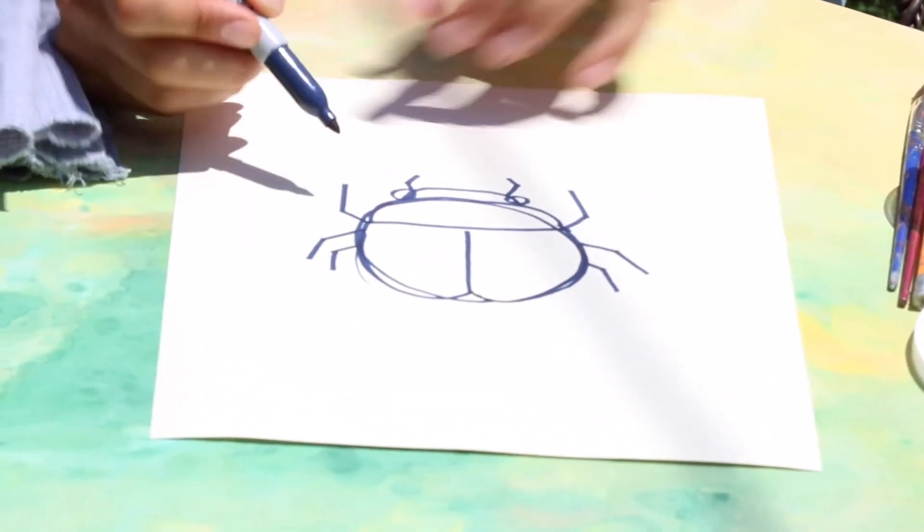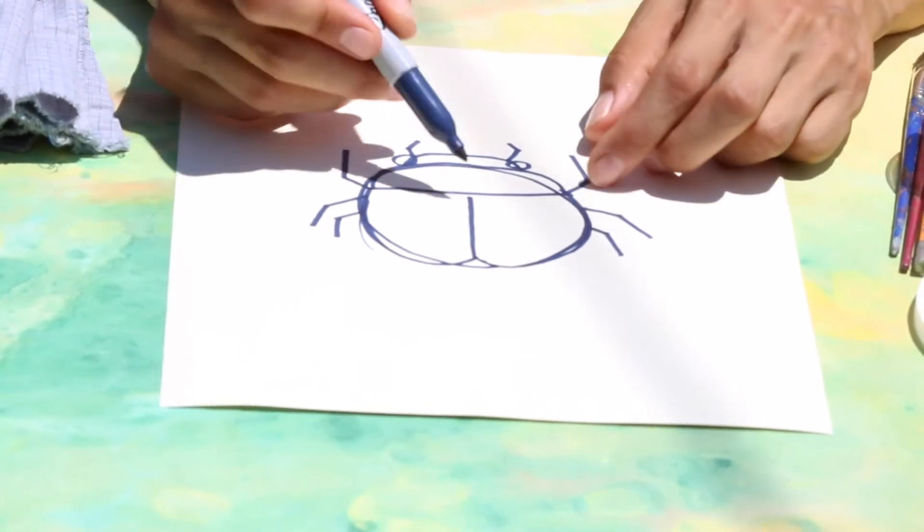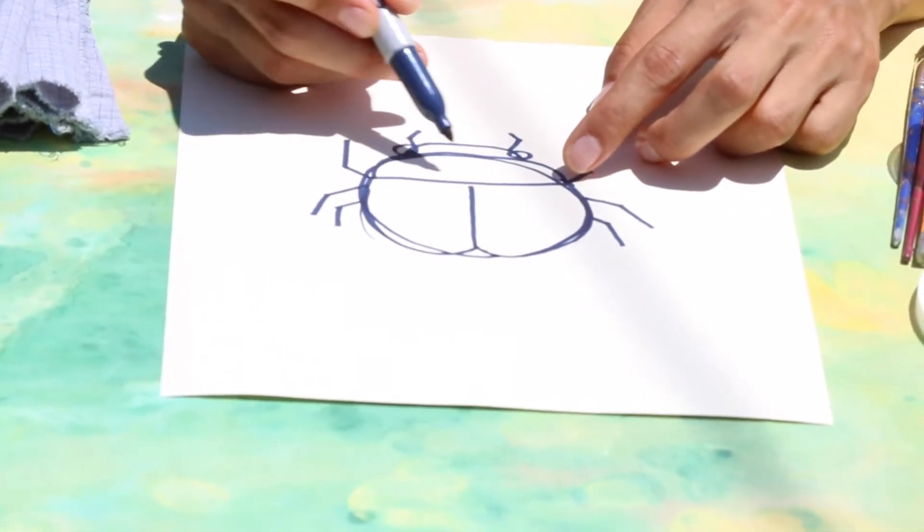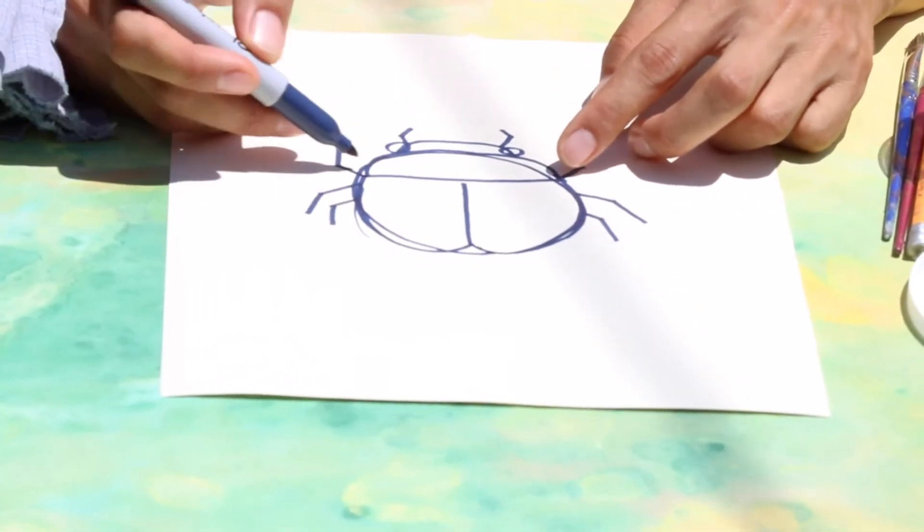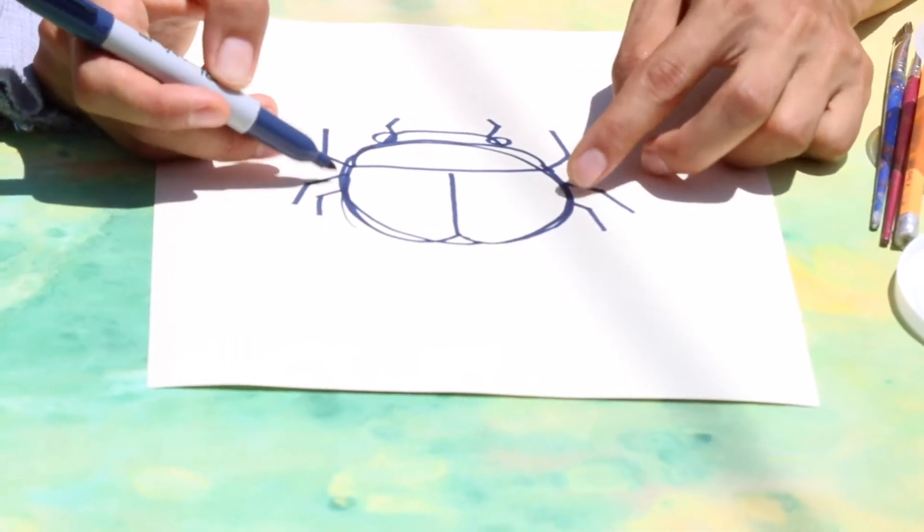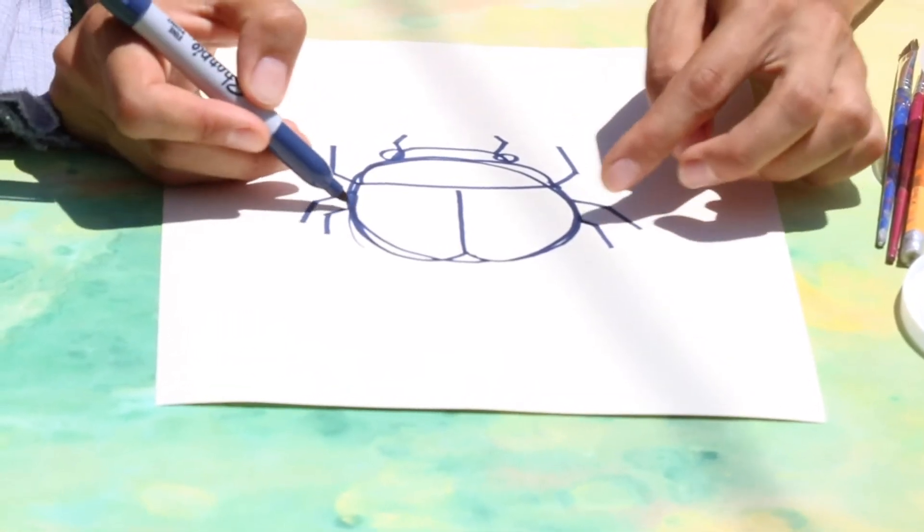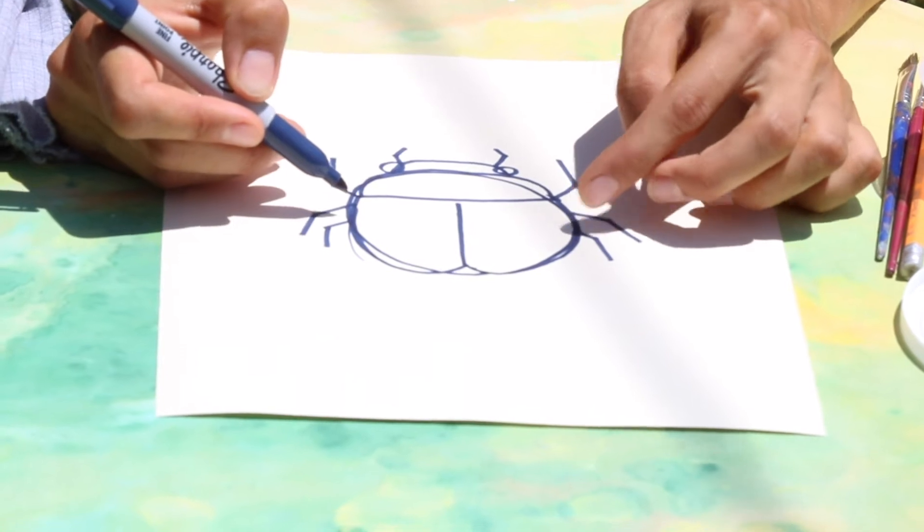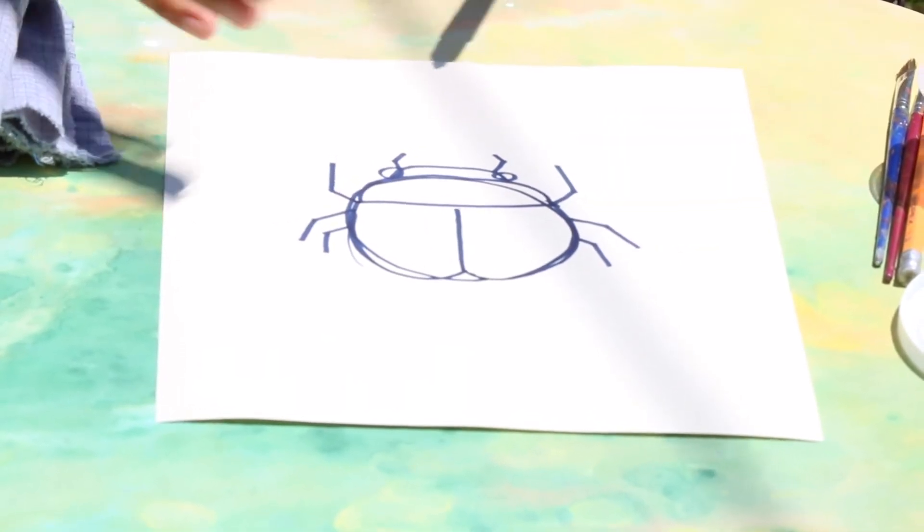You can see that I placed the top ones right where the middle part, the thorax, meets the abdomen. And then the other two are just slightly below, with the bottom leg being about halfway on the ladybug's abdomen.